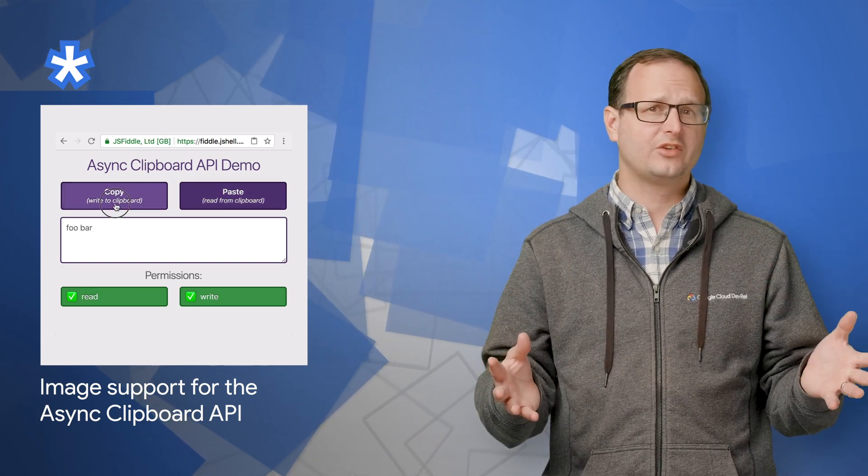In Chrome 66, we shipped the text portion of the asynchronous clipboard API. Now in Chrome 76, we're adding support for images, making it easy to programmatically copy and paste PNG images. You can learn how to use this new API feature in the article linked below.